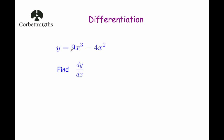Our next example: y equals 9x cubed minus 4x squared, find dy by dx. Differentiating each term separately. For 9x cubed: bring the 3 down, 9 times 3 is 27, reduce the power by 1 giving 27x squared. For minus 4x squared: minus 4 times 2 is minus 8, reduce the power by 1 giving minus 8x. So dy by dx equals 27x squared minus 8x.